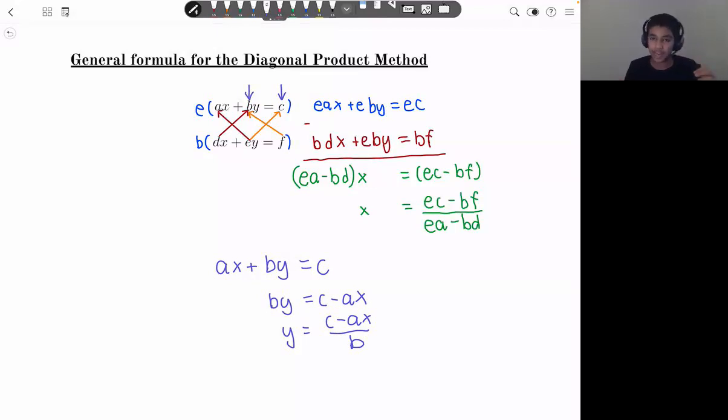So that is a proof of the diagonal product method. So now I'll explain how I actually thought of this and came up with this. So I was thinking about how a calculator can solve two variable equations. So I thought maybe there was a formula.